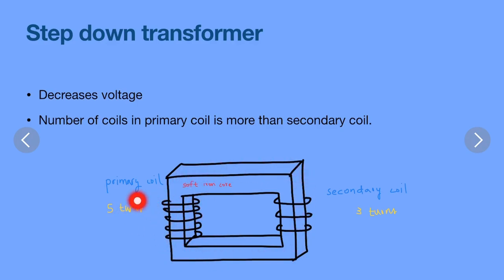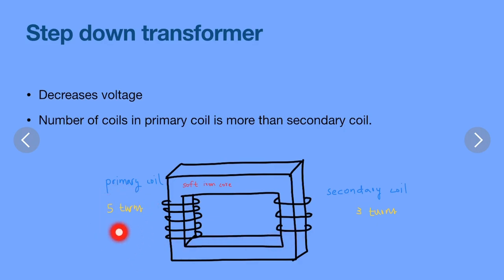The primary coil has five turns and the secondary coil has three turns. From five it goes to three, which means it is decreasing, so it is called a step-down transformer.